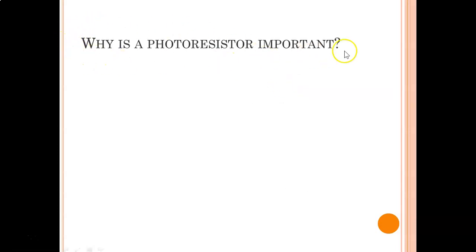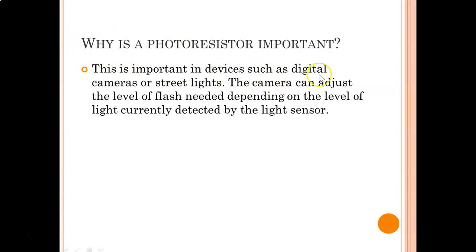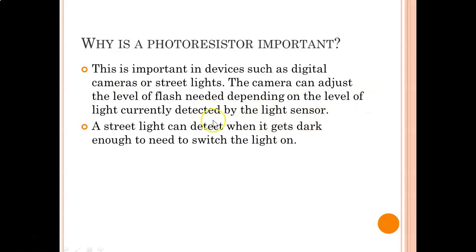Why is a photoresistor important? It is used in devices such as digital cameras or street lights. A camera can adjust the level of flash needed depending on the level of light currently detected by the light sensor. For example, a street light can detect when it gets dark enough to switch the light on — if it detects that the level of light is decreasing, the street light will begin to switch on depending on how much light it can detect.